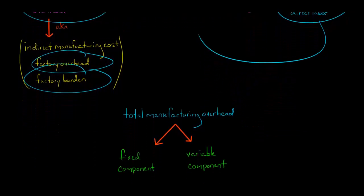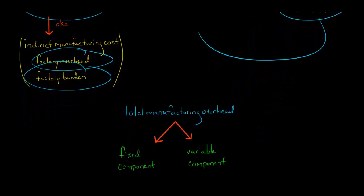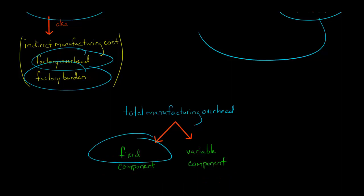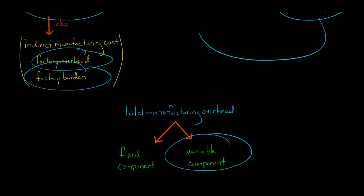Now, we can break manufacturing overhead into two components. There's a fixed component of manufacturing overhead, and then there is a variable component of manufacturing overhead. So let's look at an example.